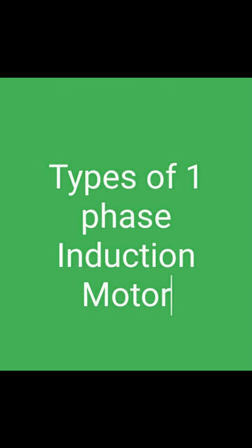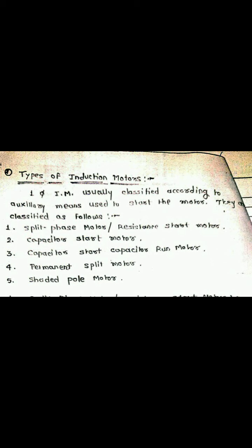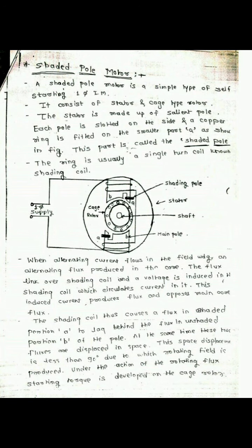Today, we are dealing with one type of single-phase induction motor, called the shaded pole type of induction motor. The single-phase induction motor is classified as split-phase induction motor, capacitor start motor, capacitor start-capacitor run motor, permanent split motor, and shaded pole motor. Today we are dealing with the last type — the shaded pole induction motor — which is a self-starting single-phase induction motor.